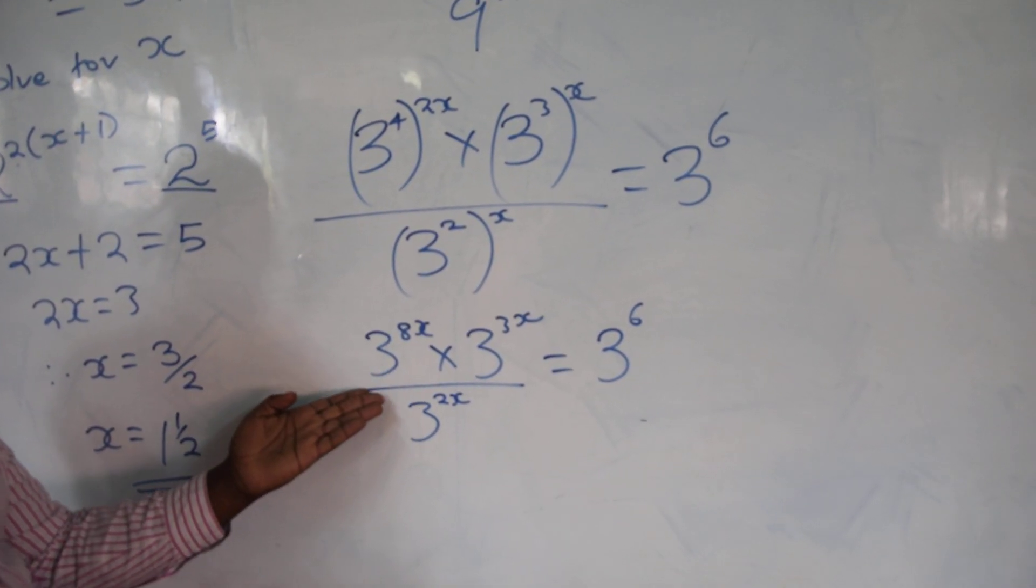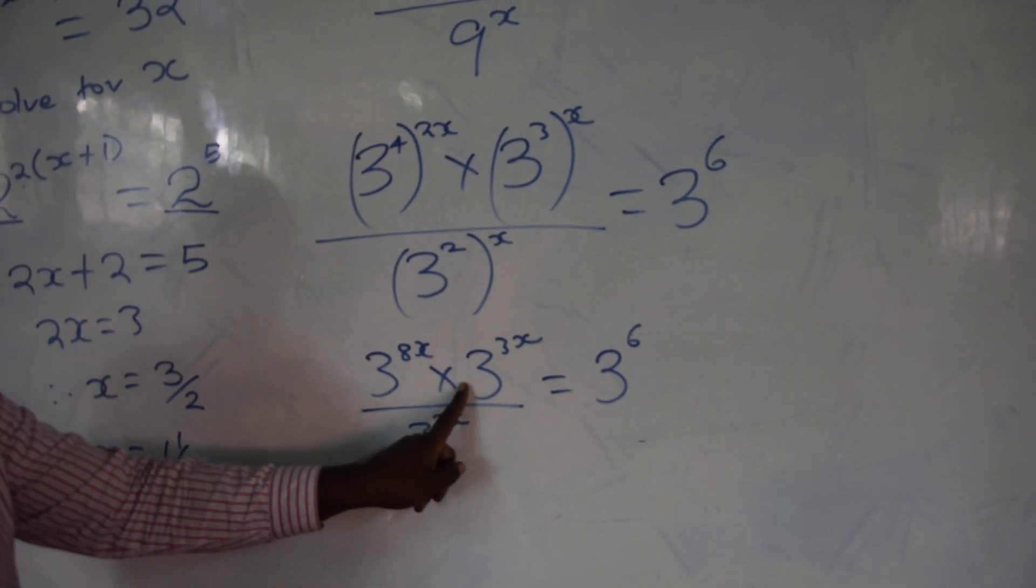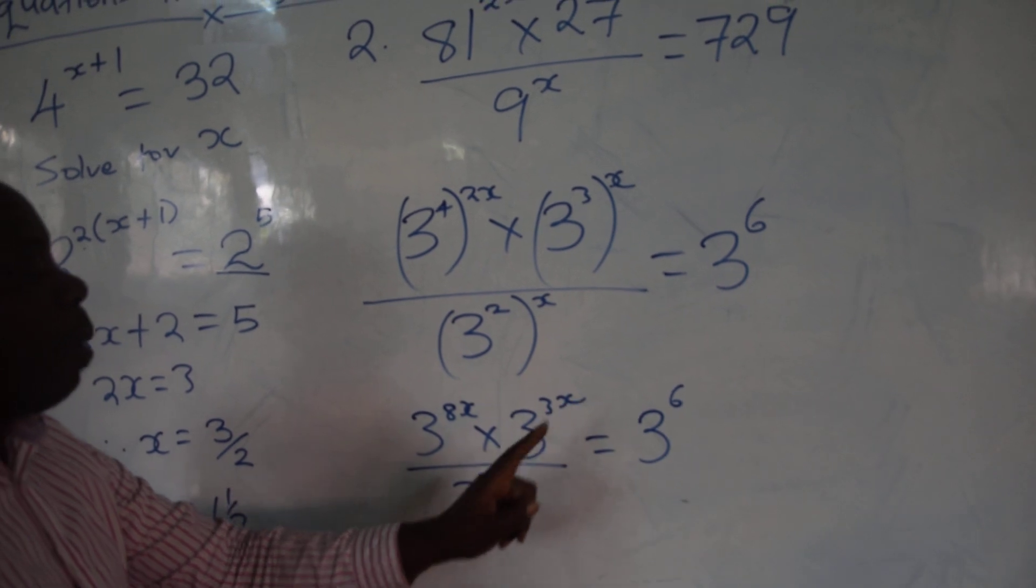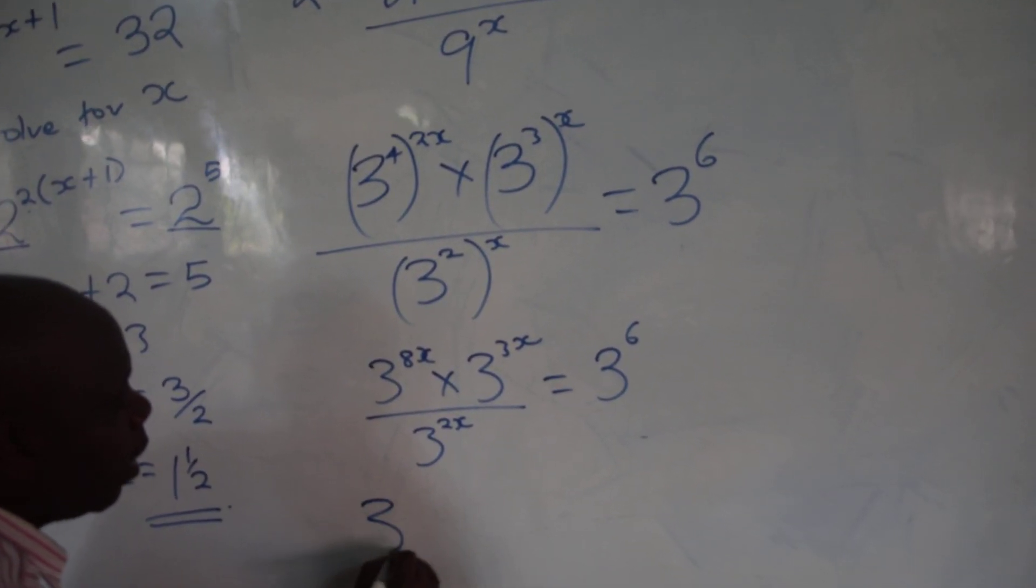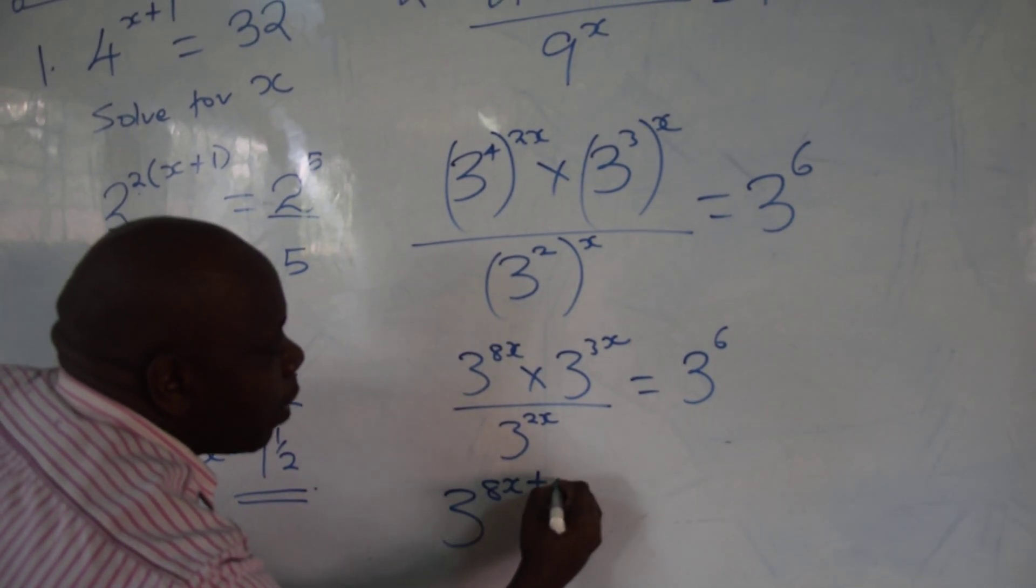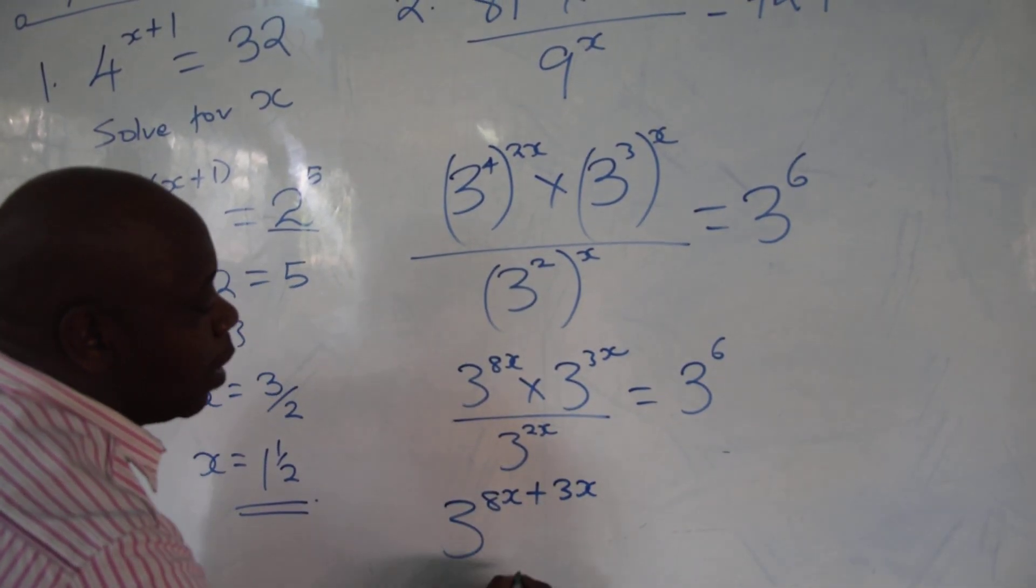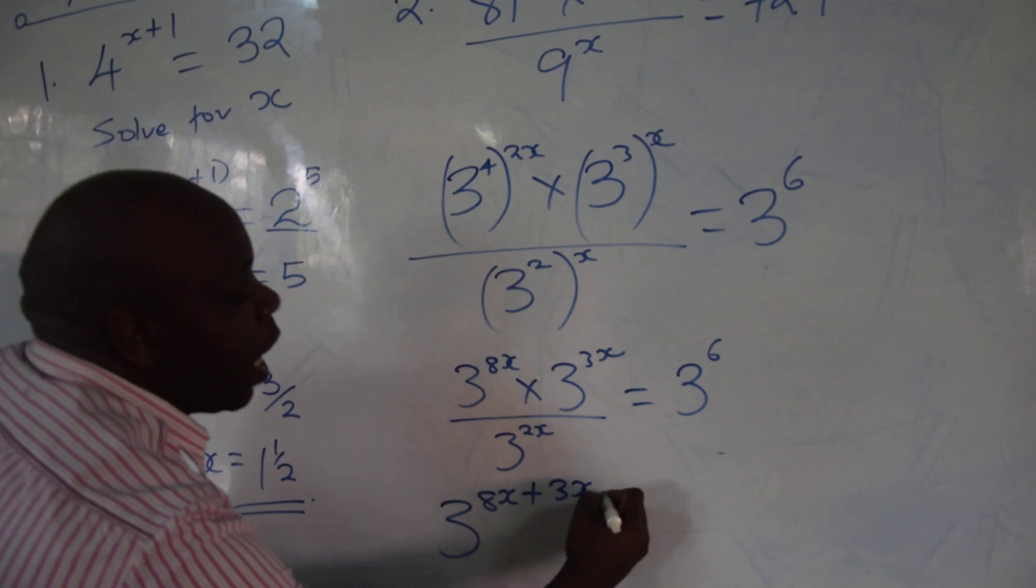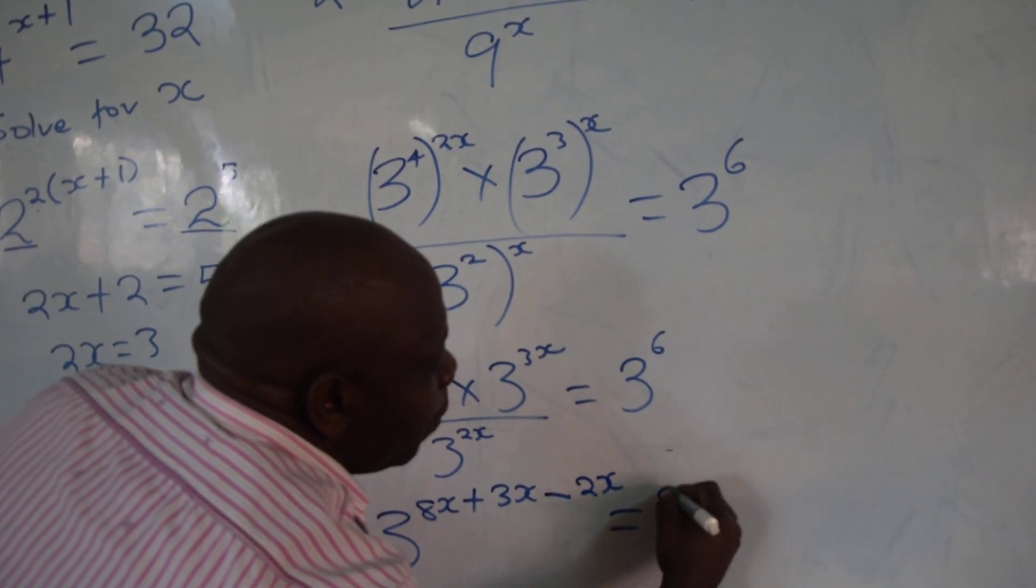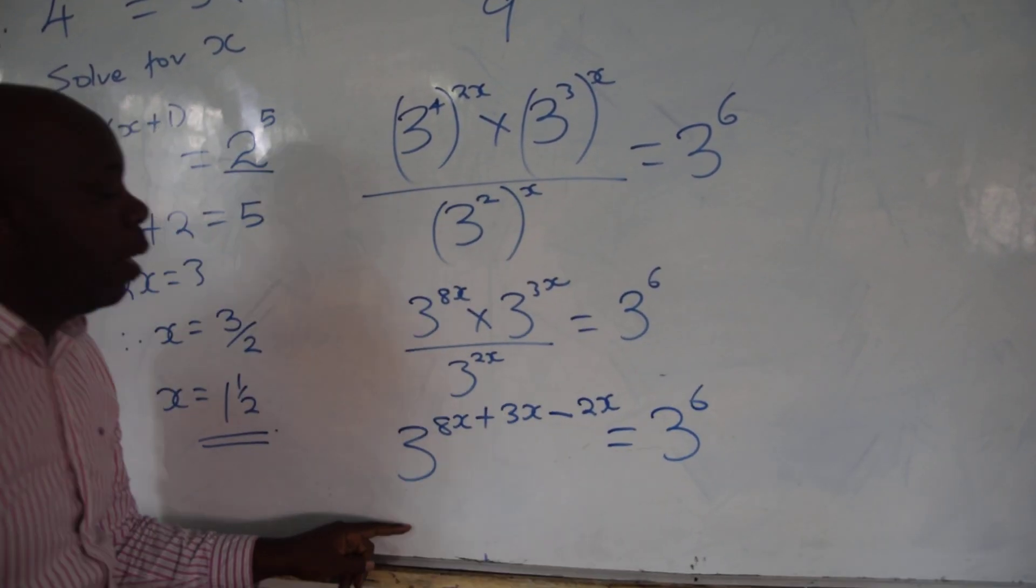Then from here, we say, when you have multiplication, you add the power. And when you have division, you subtract the power. So, this one is 3 power 8x plus 3x minus 2x equals to 3 power 6.